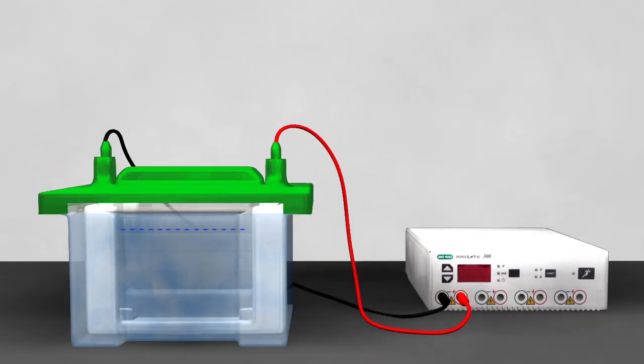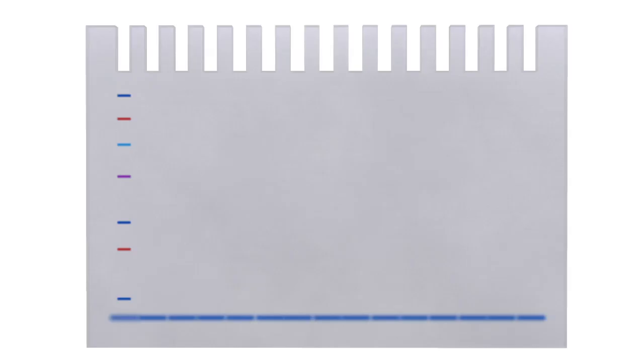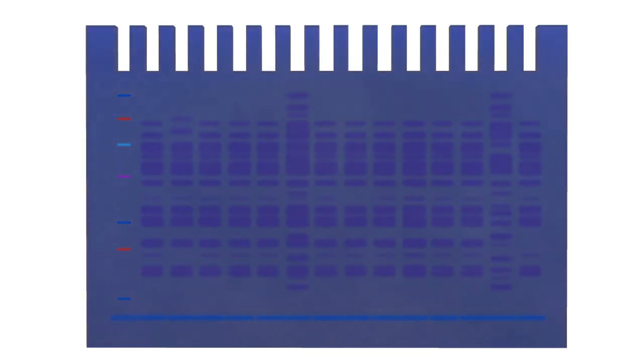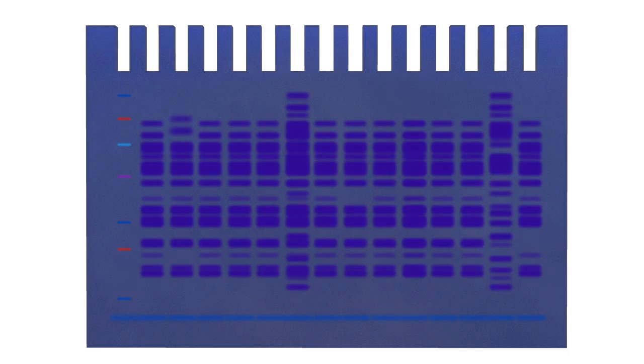After loading the protein lysates and ladder, the gel is run by connecting the chamber to a power supply. Once protein samples have been run and separated through gel electrophoresis, the gel may be stained to visualize the separated proteins directly or processed further for western blotting.